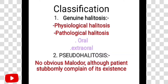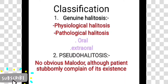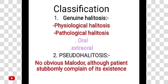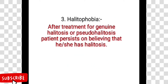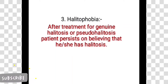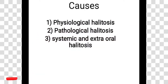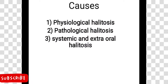Classification: First, genuine halitosis, which includes physiological halitosis and pathological halitosis. Under pathological, there is oral and extraoral halitosis. Second, pseudo-halitosis — no obvious malodor but the patient complains of its existence. Third, halitophobia — after treatment for genuine halitosis or pseudo-halitosis, the patient persists in believing that he or she has halitosis.